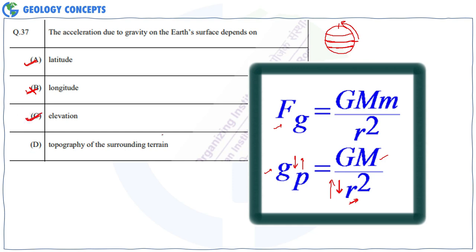For topography of surrounding terrain: if you are standing beside a big mountain, there would be a gravitational force acting from the mountain's mass towards you. There would be a vertical component of this force, and the total downward force would decrease. This decreases the gravity value at that point, so this is also a correct option. Therefore A, C, and D are correct for question 37.